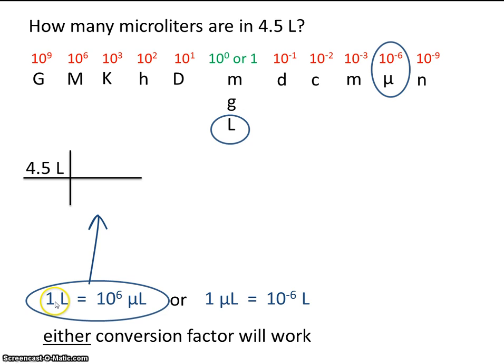Now what goes where? Which one of these goes in the numerator and which one goes in the denominator? You'll remember we discussed that if there's a unit in the numerator and that same unit appears in the denominator, then they will cancel out. So I've arranged the conversion factor in this fashion so liters will cancel out. So in your calculator do 4.5 times 10 to the 6th. And the answer is 4.5 times 10 to the 6th microliters.